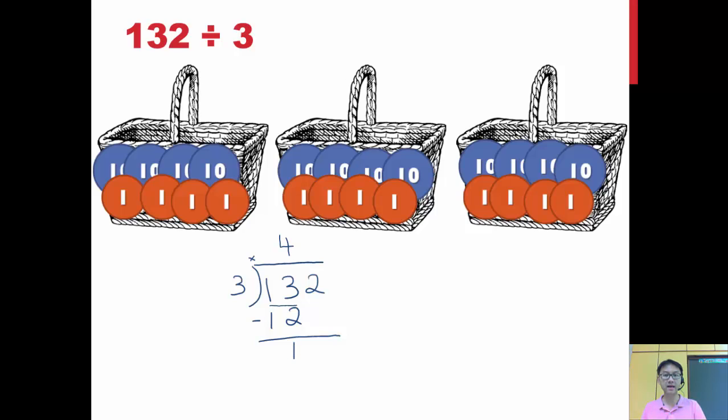So that was that one ten that I saw just now. So I will have to regroup this with the two ones. So I need to pull down my 2 to form 12. So remember I had 12 ones just now. So 12 divided by 3 will be 4. So 4 times 3, just to check to make sure I'm correct, is 12. And minus off, I have nothing left. So 132 divided by 3 will give me 44 with no remainder.